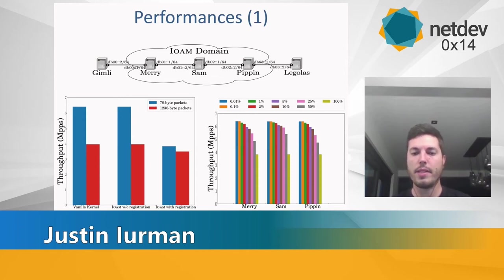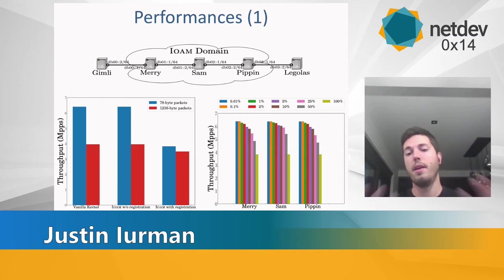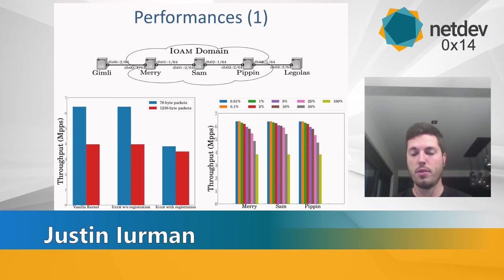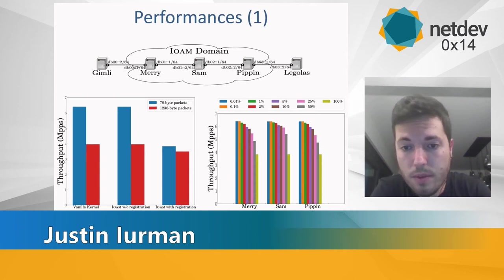On the right graph, we vary the frequency of IOAM insertion. Having 100% insertion rate — inserting IOAM into every packet — is not good. We tested 50%, 25%, 10%, 5%, and so on. From the graph, 10% or 25% would be acceptable, and that could serve as advice to an operator — though it depends on many parameters.